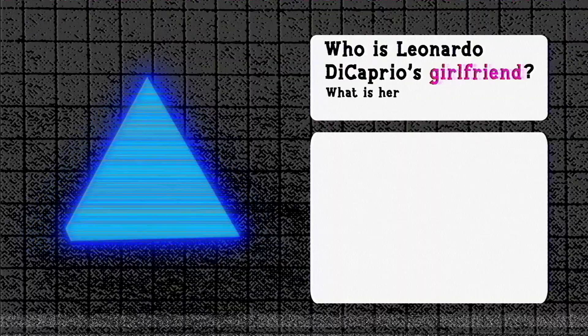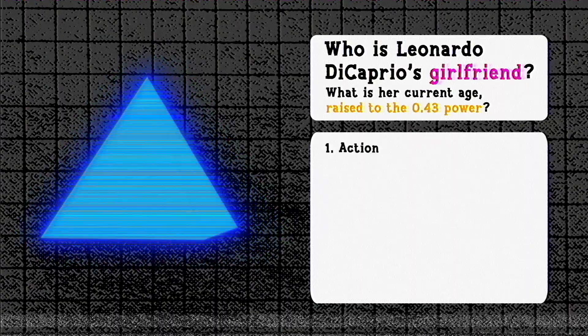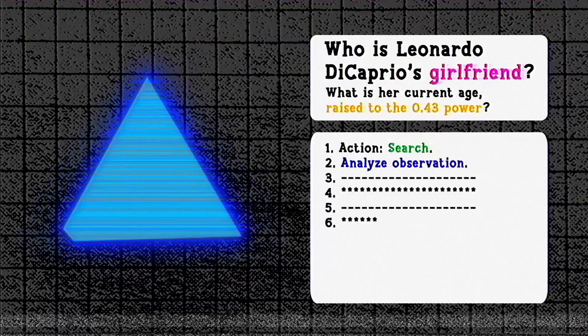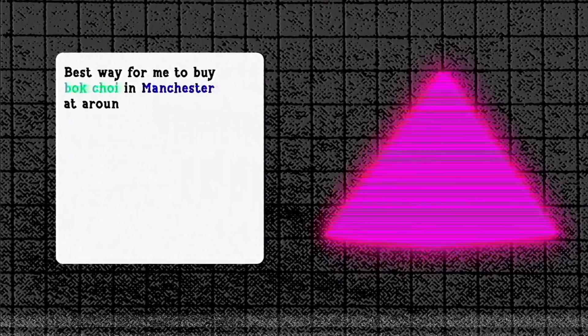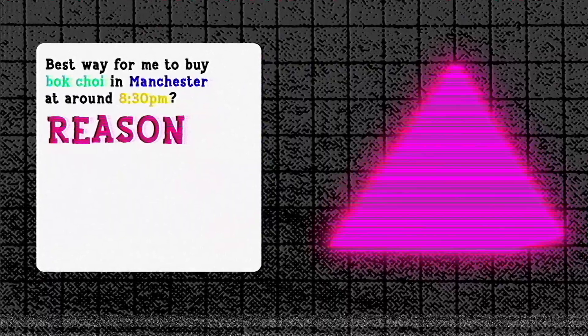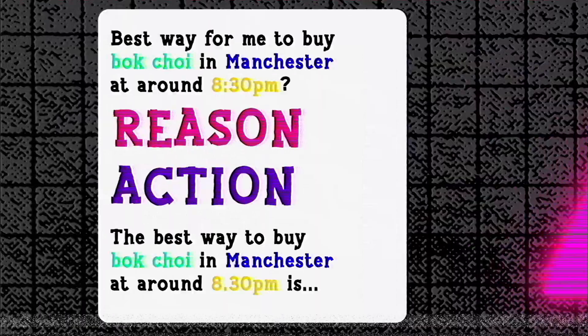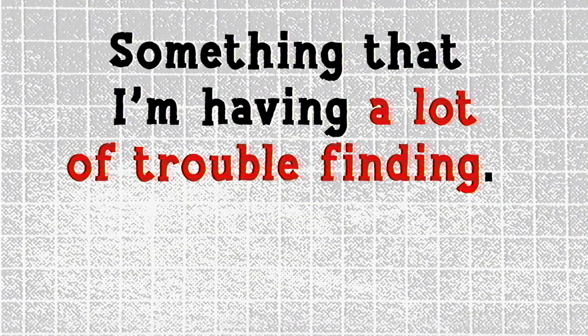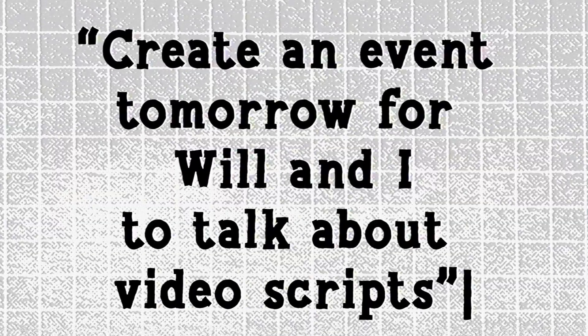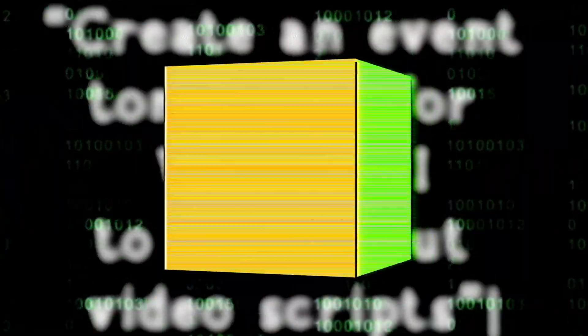For example: who's Leonardo DiCaprio's girlfriend? What is that age raised to the 0.43 power? — this is from the documentation, by the way. You can see the agent try and figure it out, from the action it needs to take — in this case, search — to the observation it gets. This agent executes steps along the way until it finally gets to the answer. Agents do this through something called React, or reasoning and acting. If you ask the AI the best way to get groceries based on an item, location of the store, and time of day, the AI reasons about the best route and plans actions to accomplish it. Something I find trouble with is having agents create things for you — like saying, create an event tomorrow for Will and I to talk about video scripts. There really isn't much on how LLMs can do this, and it's hard to find tools that specifically interact with APIs to create data and send it on your behalf.